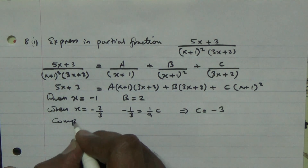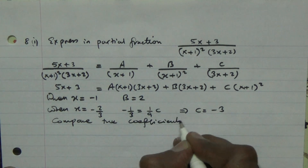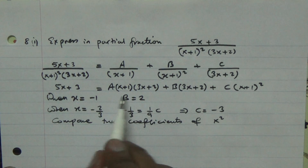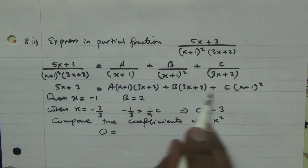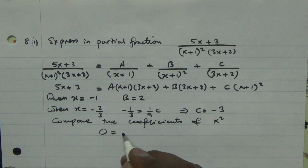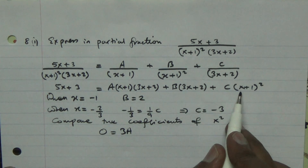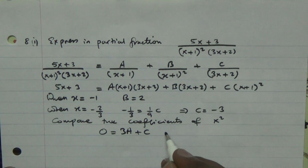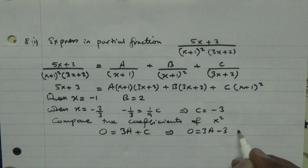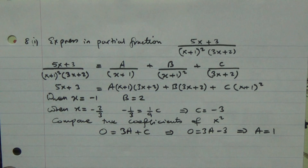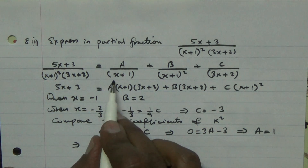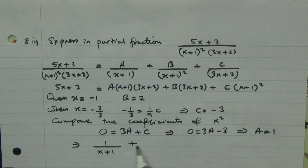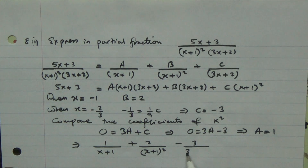Now we compare coefficients of x squared. There is no x squared on the left-hand side, so its coefficient is 0. On the right-hand side, x times 3x gives 3x squared times A, so coefficient is 3A. The x squared term from C gives coefficient C, which we found is minus 3. So 0 equals 3A minus 3, meaning A equals 1. Therefore the partial fractions are: 1 over (x plus 1), plus 2 over (x plus 1) squared, minus 3 over (3x plus 2).